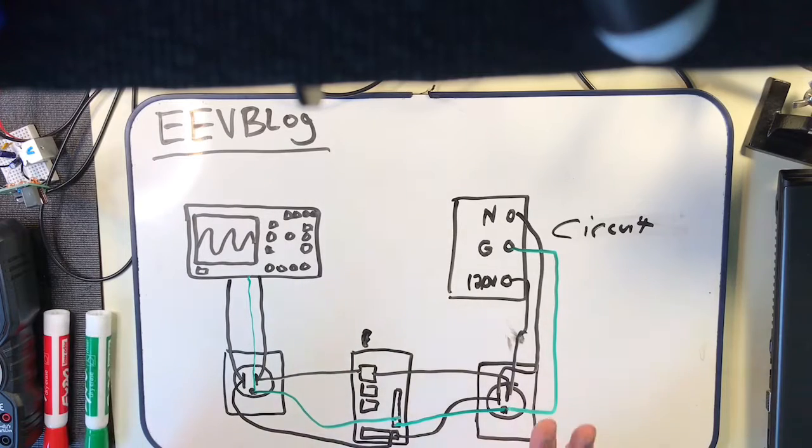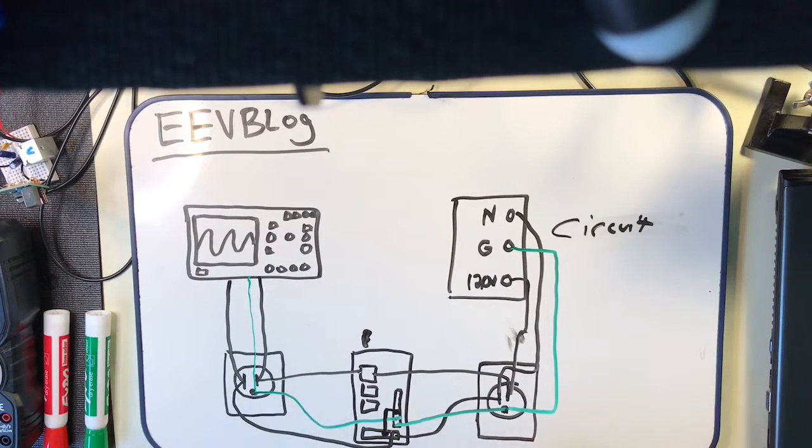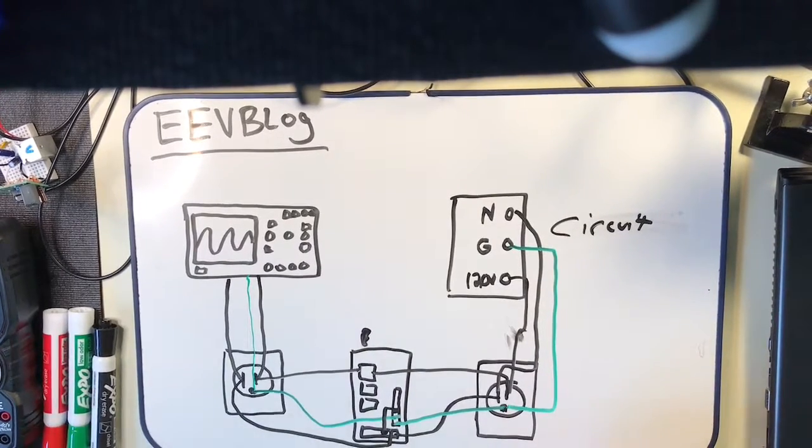Now an important thing to keep in mind is that in most domestic situations, the neutral is connected directly to the ground.